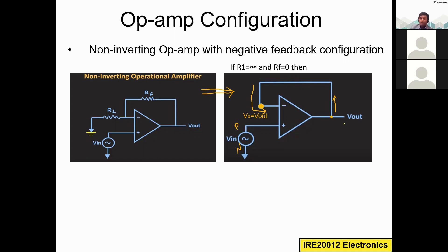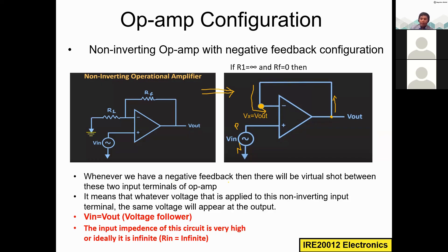The value of VX is going to be equal to V-out — the node voltage VX equals V-out. Whenever we have negative feedback, there will be a virtual short between the two input terminals; that is the summing-point rule. So whatever voltage appears at one terminal, the same voltage will appear at the other. For example, if I apply 1 volt, the same 1 volt appears at the output.